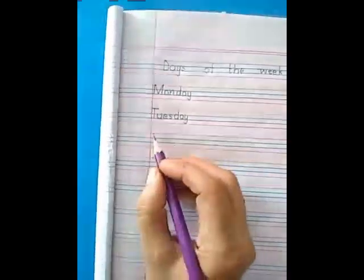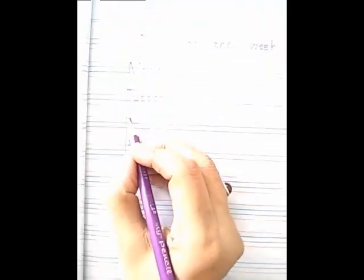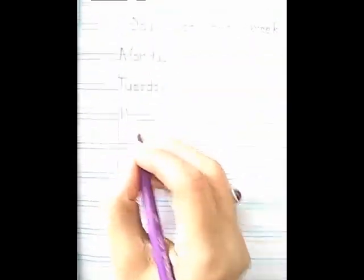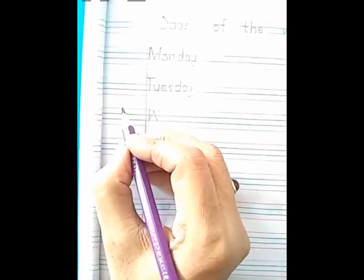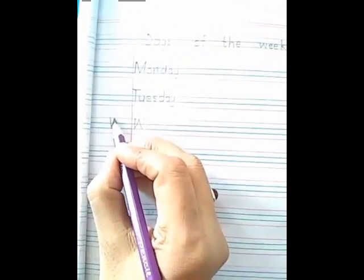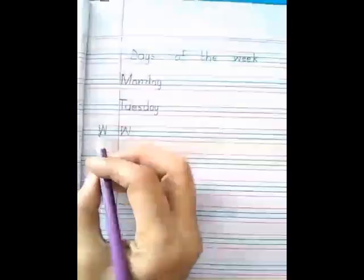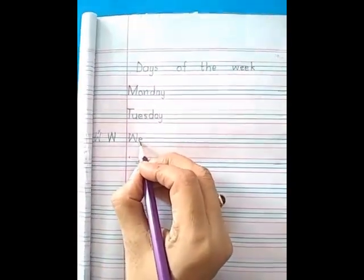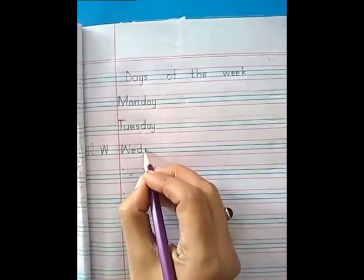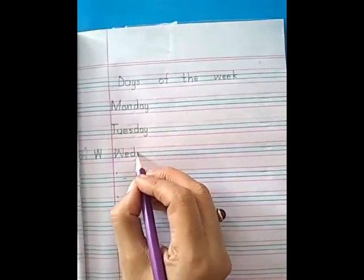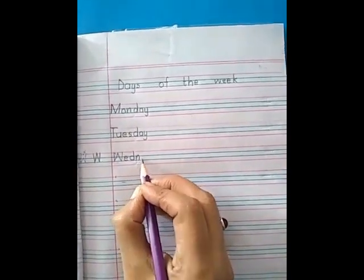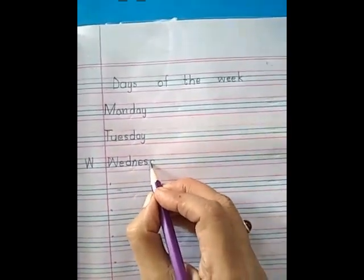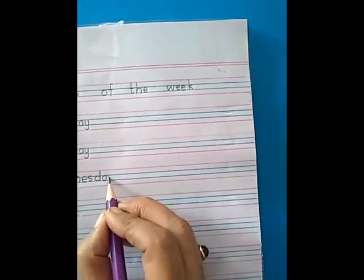And then what comes after Tuesday? Wednesday. First write W-E-D. Make the formation of W just like me — make a single V, go up, again come down. Don't make W the wrong way. W-E-D, N-E-S, Wednesday. D-A-Y, day. Wednesday.